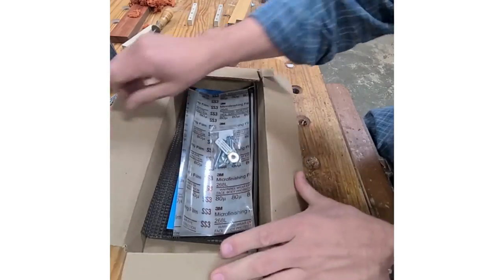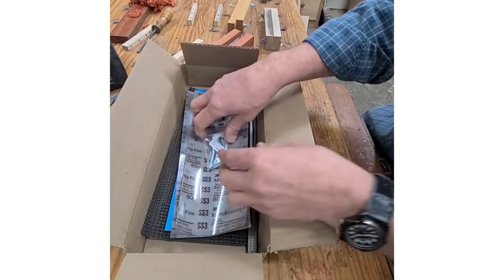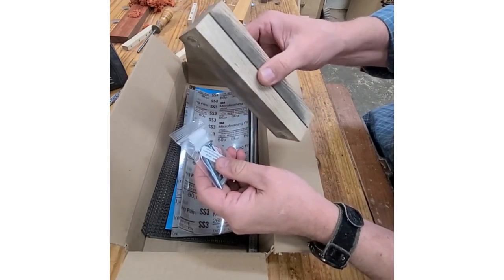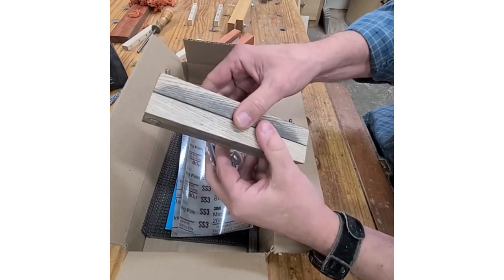When you open it up, you get first of all a hardware kit to make a scraper vise. It's a super useful item when you're preparing the edges of a cabinet scraper.